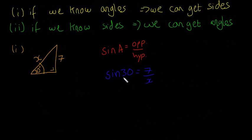Now it's about rearranging to find X. I'm going to multiply both sides by X. That means X sine 30 equals 7 over X times X. The X on top and bottom cancel, so we're left with X sine 30 equals 7.